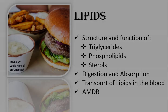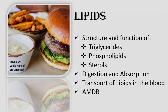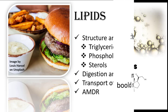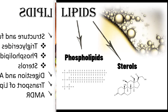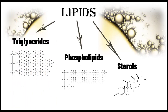Hi, Professor Gronlund here. In this chapter, we'll be investigating the lipids. We'll look at the chemical structure and functions. Lipids tend to come in three groups: the triglycerides, the phospholipids, and the sterols.